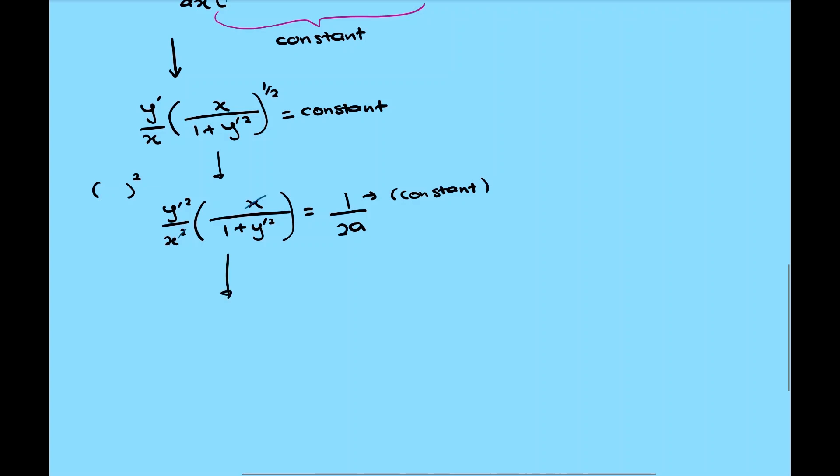Next, we simplify it and rearrange. Now we have it in y prime or dy dx term becoming equal to square root x over 2a minus x squared. To find y, we're going to integrate for both sides. And next, we're going to solve for the right integral.